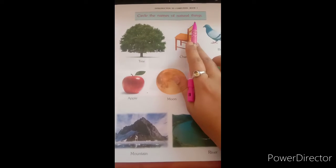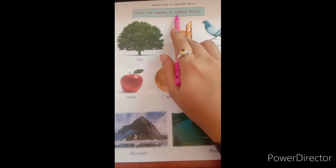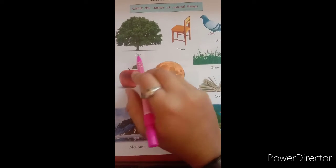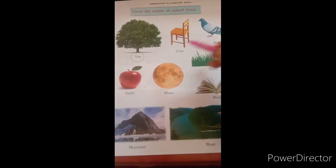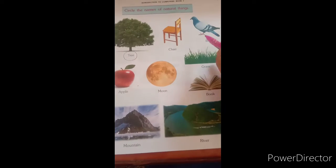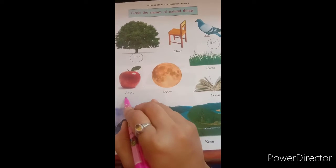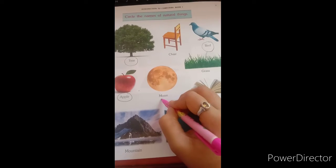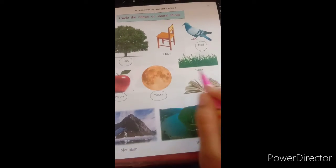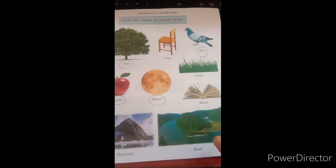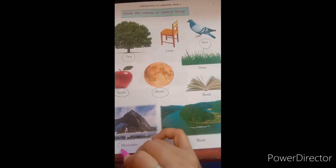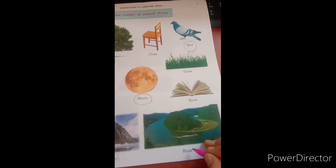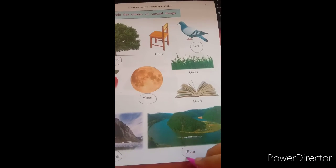Next, circle the names of natural things. Tree — is tree man-made or natural? Tree is natural things. Chair is man-made. Bird is natural things. Apple is natural things. Moon — is moon man-made? No, moon is natural things. Book is man-made. Mountain is natural things. River — dear students, is river man-made? No, river is natural things.